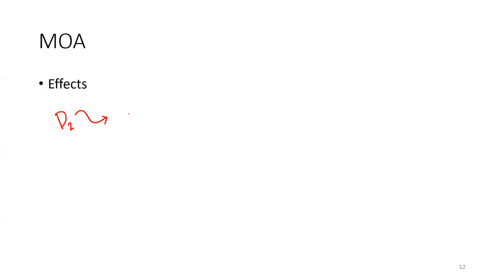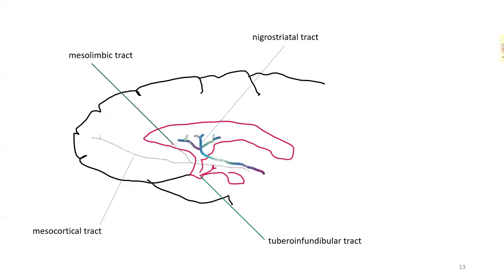There are a few dopaminergic pathways in the brain that we monitor and assume these drugs act on. We have the mesocortical and mesolimbic pathways, which are involved in cognition, motivation, and mood.